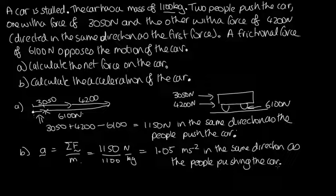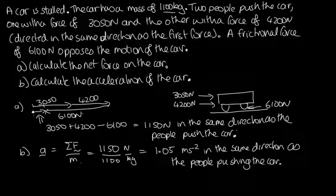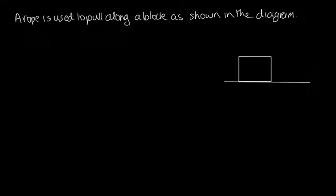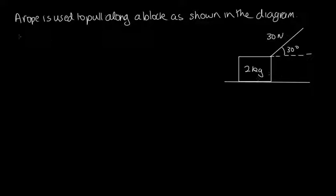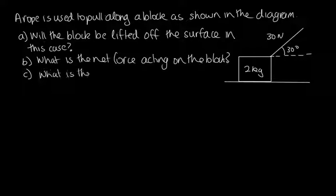That was a relatively straightforward example dealing only with horizontal force components. Now let's look at a more complicated example that introduces the normal reaction force. A rope is used to pull a block, applying a force of 30 Newtons at an angle of 30 degrees to the horizontal. The block has a mass of 2 kilograms. Part A: will the block be lifted off the surface? Part B: what is the net force? Part C: what is the acceleration?